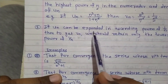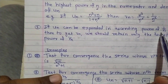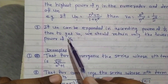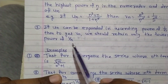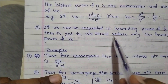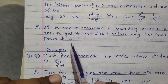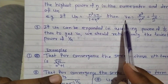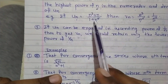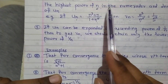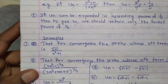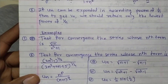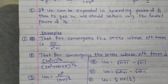A second note: if un can be expanded in ascending powers of 1/n using standard expansions, then to get vn we should retain only the lowest power of 1/n. This means taking the maximum power of n as common from the numerator and denominator.